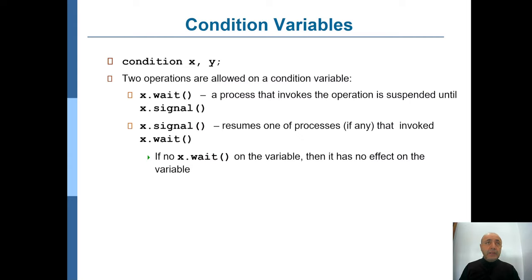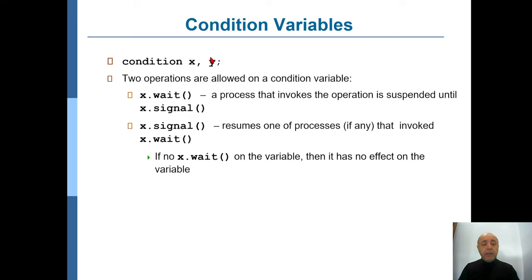There will be several condition variables we need to use. For each condition variable we will have its corresponding wait and signal methods, which are called by the processes to enter the monitor. For example, a process will first call wait on some specific condition x until someone calls signal on that specific condition, so that the condition becomes available and the blocked or waiting process can continue.